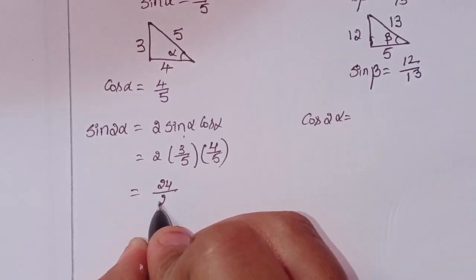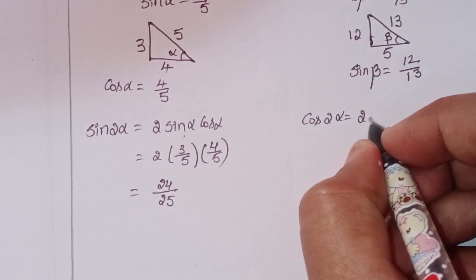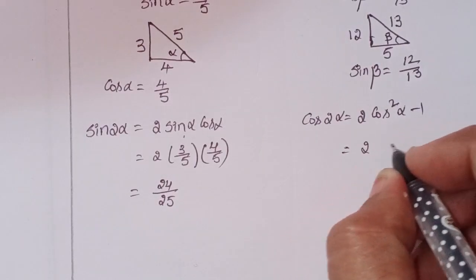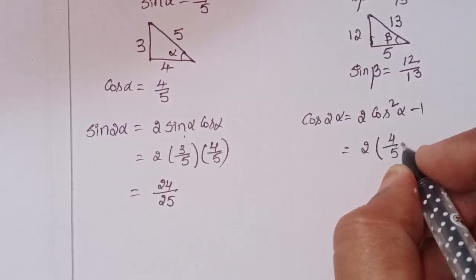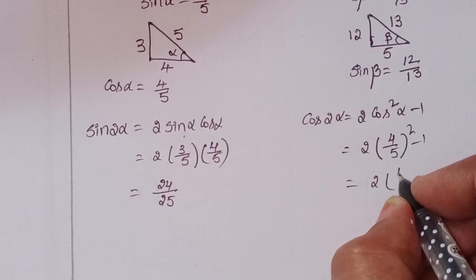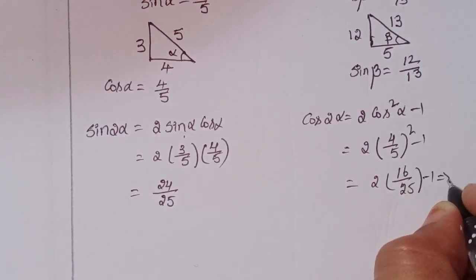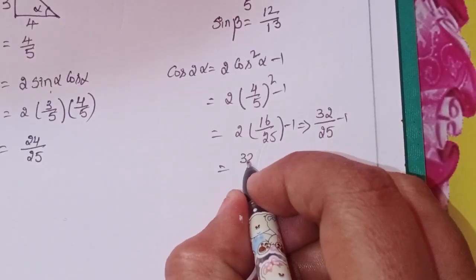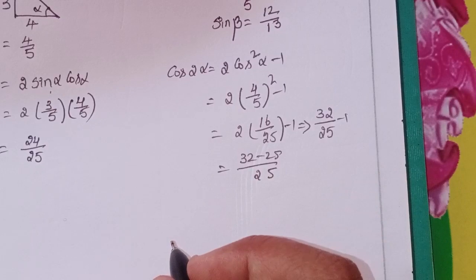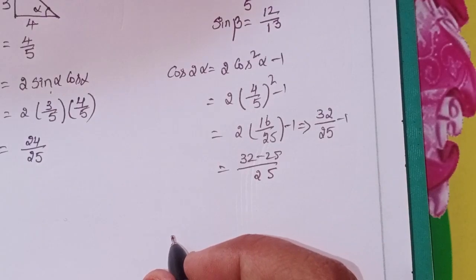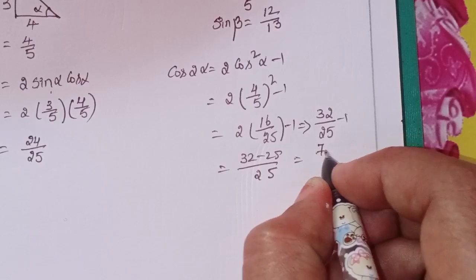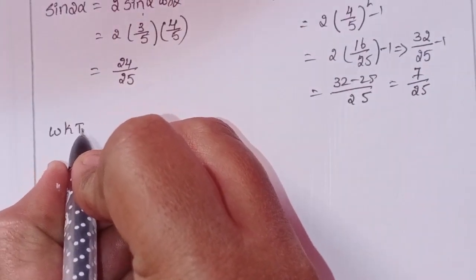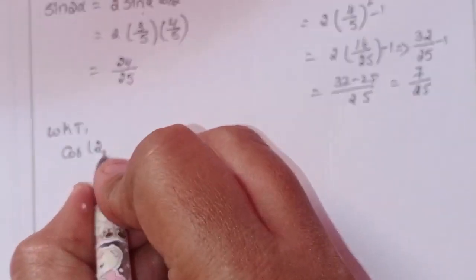cos(2α) = 2cos²(α) − 1, or 1 − 2sin²(α). Taking the first: 2 × (4/5)² − 1 = 2 × (16/25) − 1 = 32/25 − 1 = (32 − 25)/25 = 7/25.